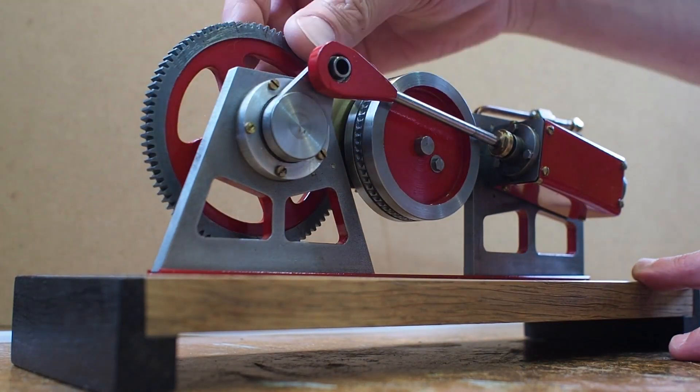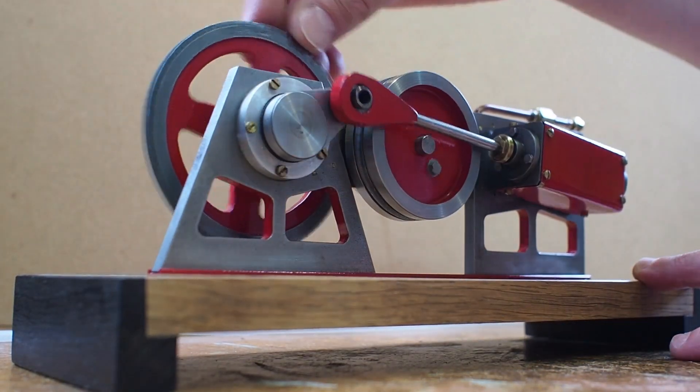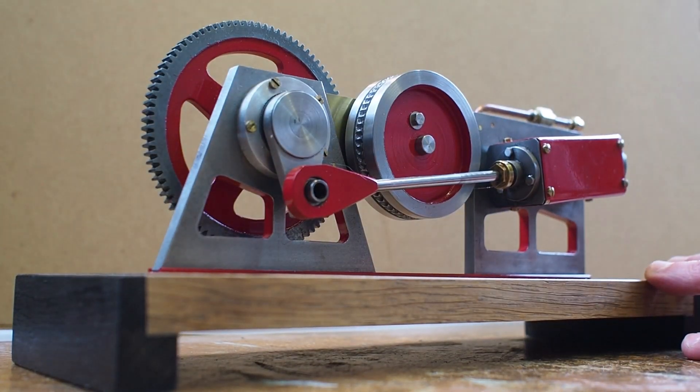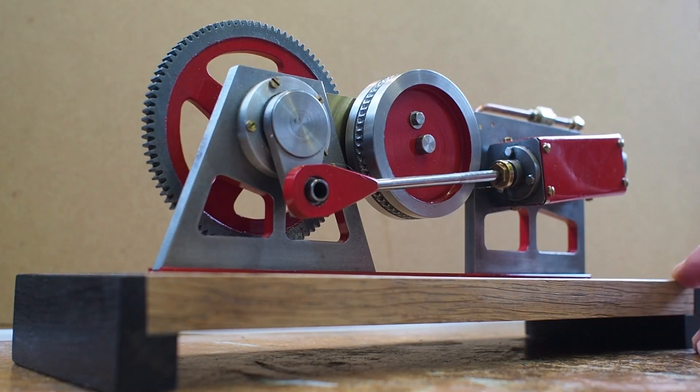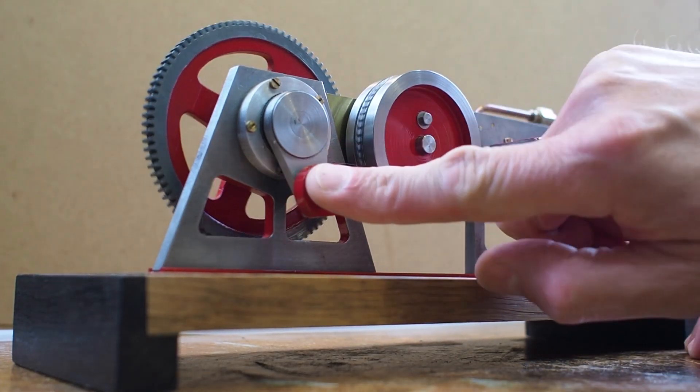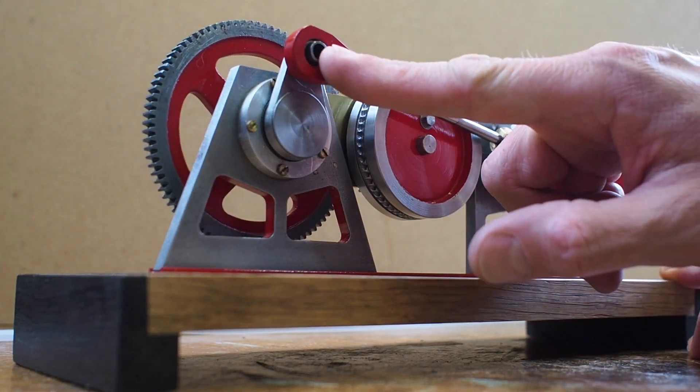Here is my double acting oscillating engine. 15mm bore, 50mm stroke, and as you can see I've got a 25mm offset on the crank.